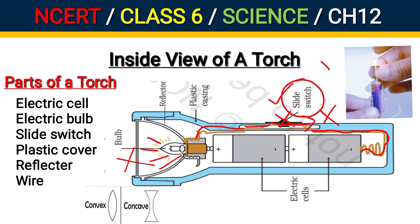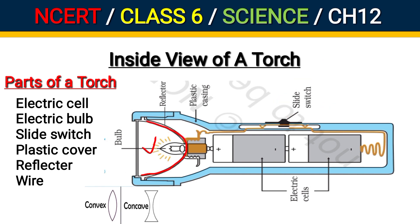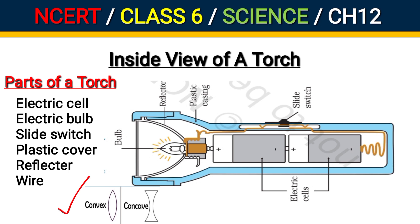This slide switch works as described. The bulb is surrounded on its sides by a glass cover. One type is convex and the other is concave. Here there is a glass reflector which works to reflect the light from the bulb. A convex mirror has a surface that curves outward. A concave mirror has a surface that curves inward, and this concave mirror or glass makes the light rays parallel.